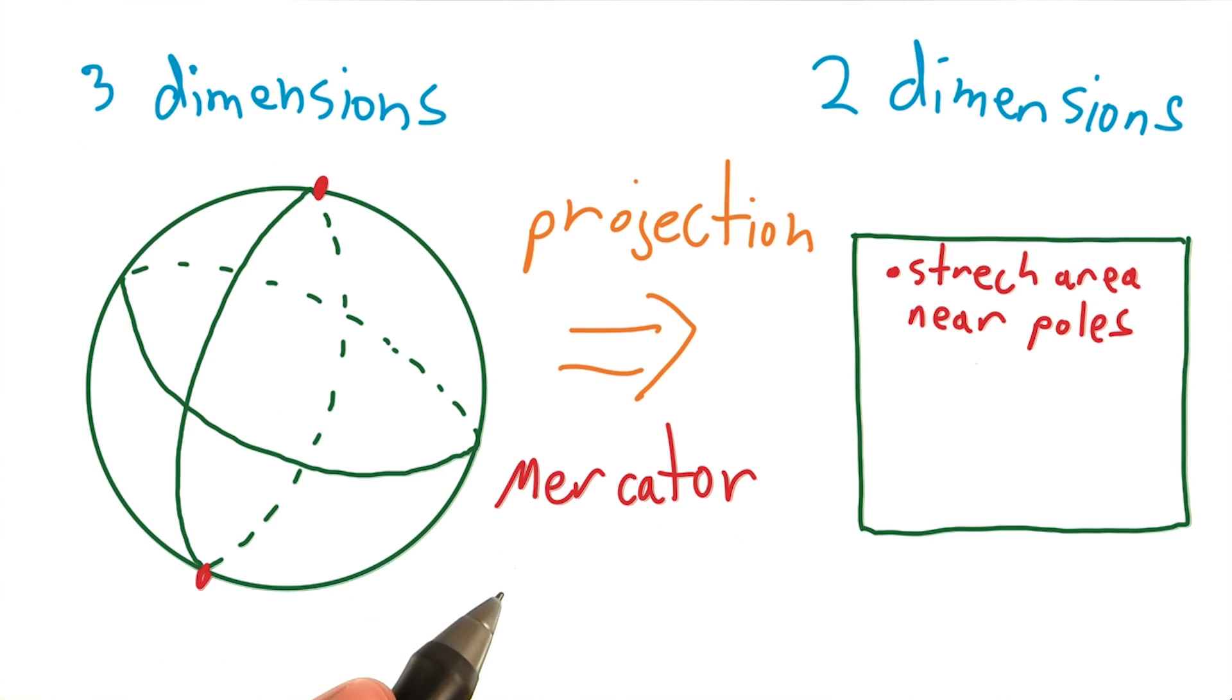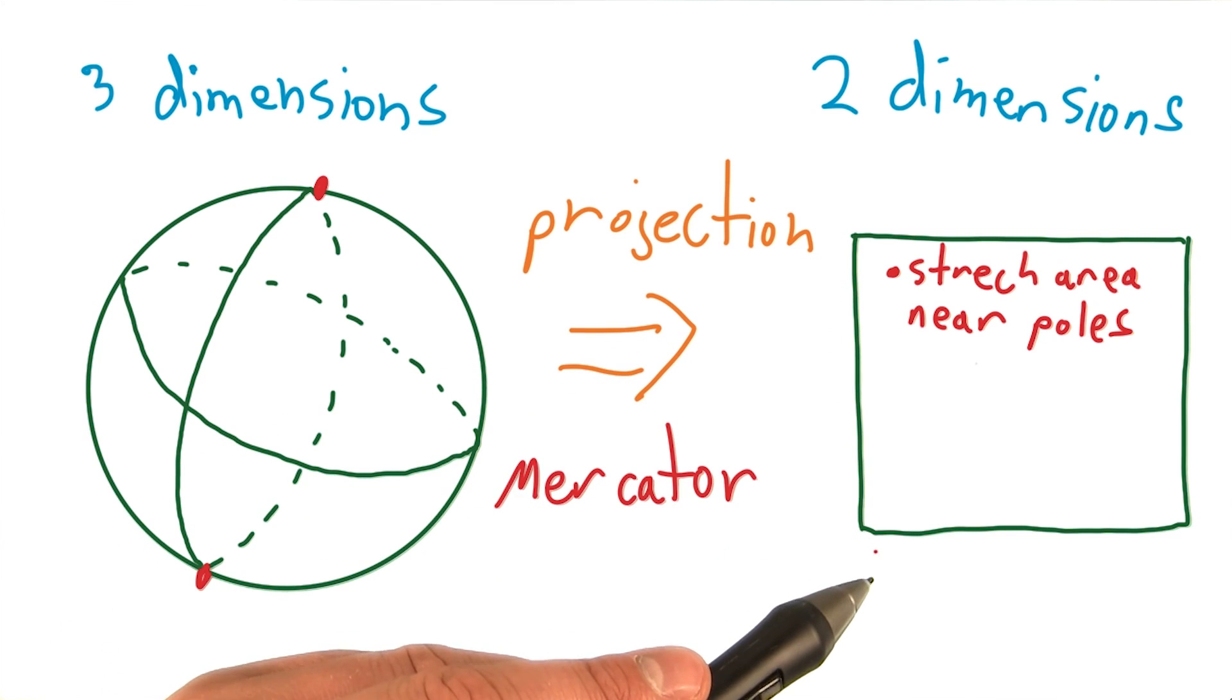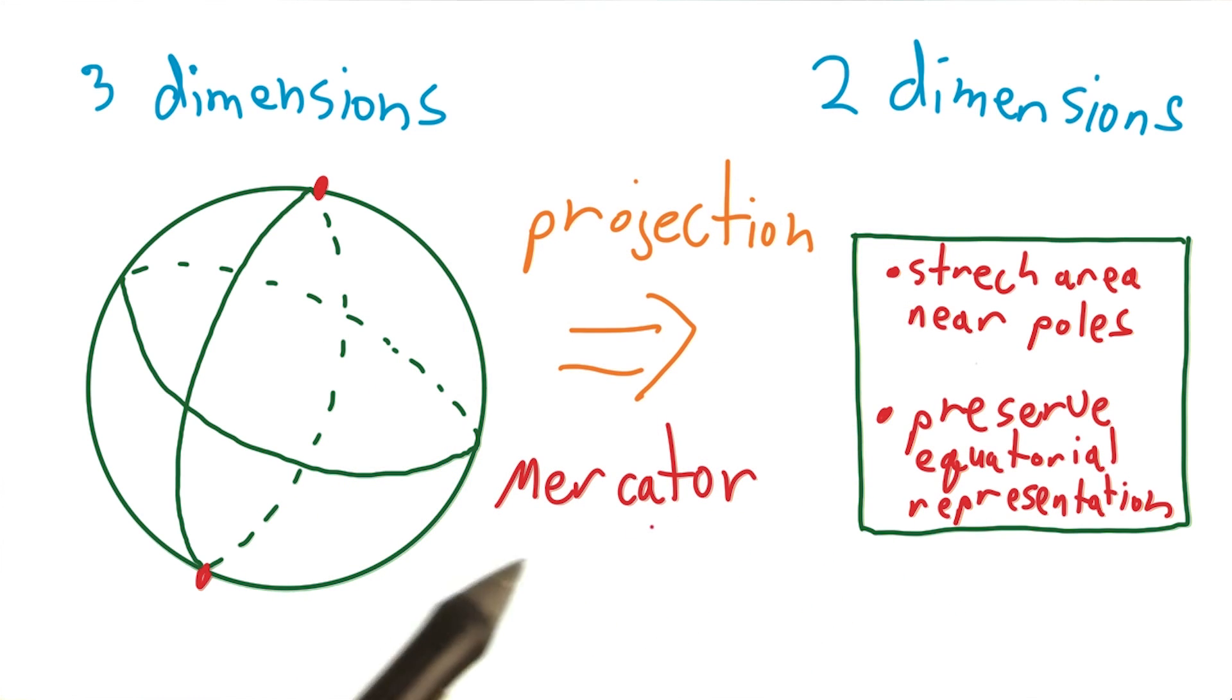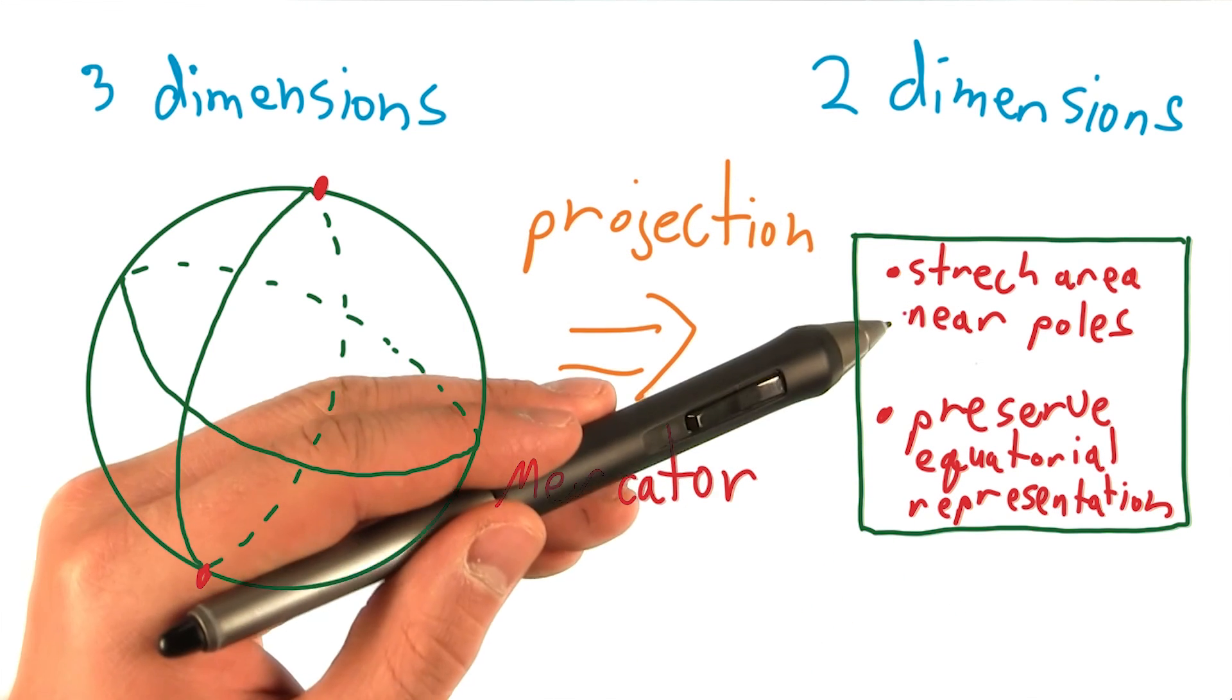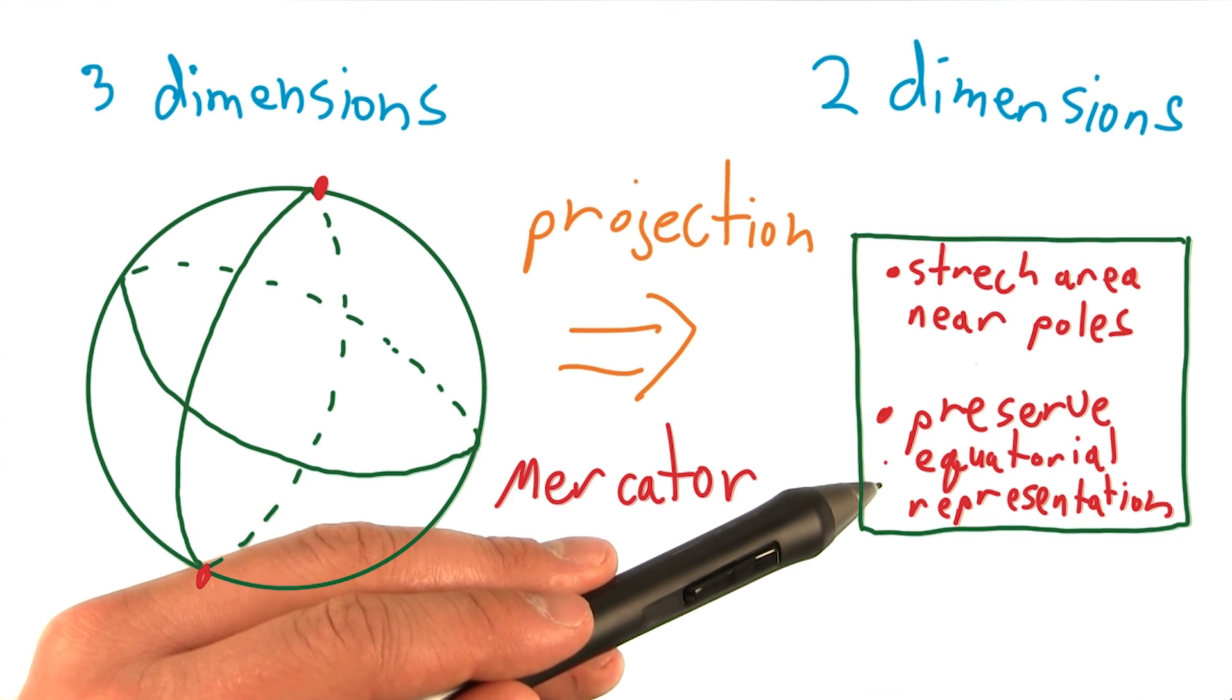To imagine this projection, think of trying to flatten this globe out. And in order to get a square, you stretch the areas near the poles, so that the Earth can be represented by a rectangle, which also has the effect of straightening out the latitude and longitude lines.